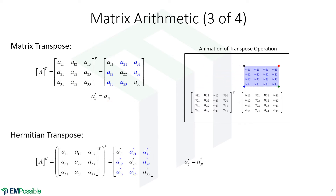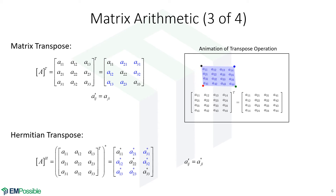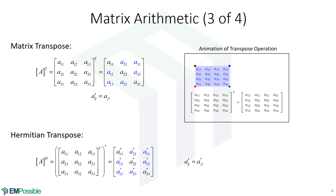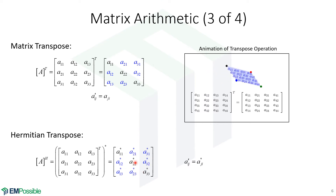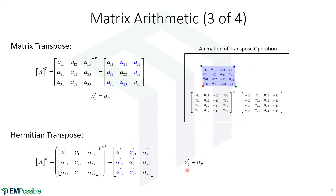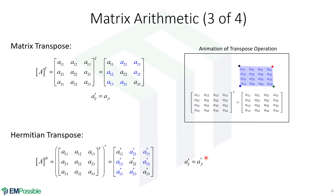There's also what's called a Hermitian transpose. This is a transpose, but after the transpose is done, we calculate the complex conjugate of every element in that transposed matrix. So the (i,j) element in the transposed matrix is the complex conjugate of the (j,i) element.